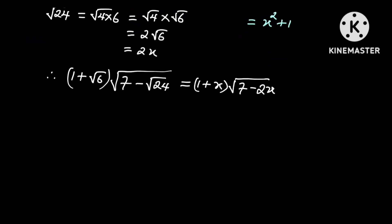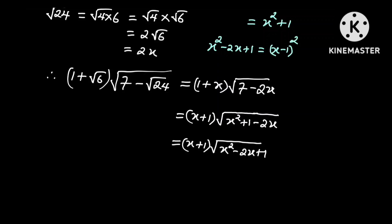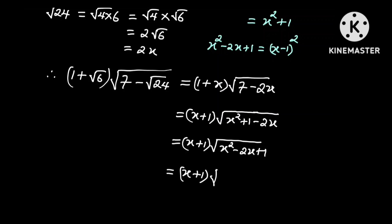And so this is equal to x plus 1 multiplied by the square root of x squared plus 1 minus 2x. And this can also be written in the form x plus 1 multiplied by the square root of x squared minus 2x plus 1. But we know that x squared minus 2x plus 1 is a perfect square, and this is equal to x minus 1, all squared.